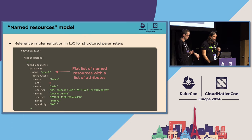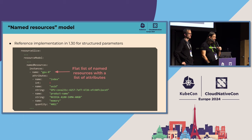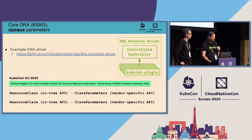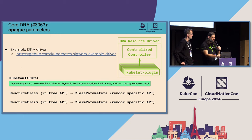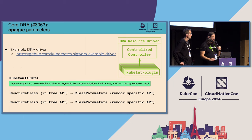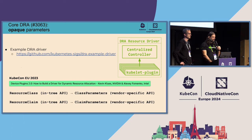Before jumping into the details, I want to set some expectations about this talk. This is a maintainer track talk, so we're not going through all the details about how the whole mechanism works. If you're very new to DRA and don't know anything about it, we're glossing over a lot of details. But if you watch the talk from last year in Amsterdam, it gives a very good overview of what DRA is, how it works, and what these different abstractions are: resource class, resource claim, class parameters, claim parameters, and so on. The purpose of this talk is really to highlight the state of the project and where we see it going in the future.